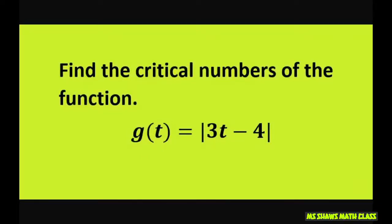Hi everyone. We're going to find the critical numbers of the absolute value function g(t) = |3t - 4|.